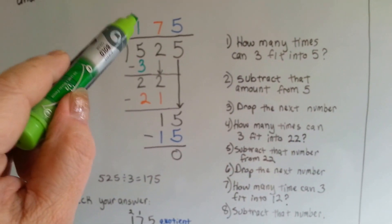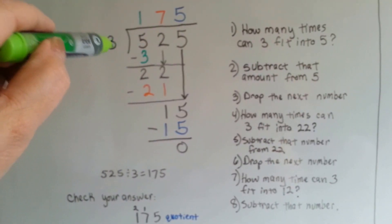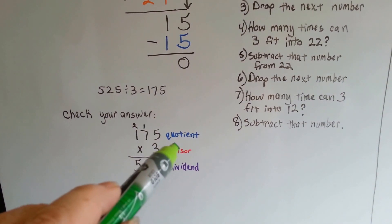We multiply this 175 times the 3. 175 is the quotient. The 3 is the divisor.